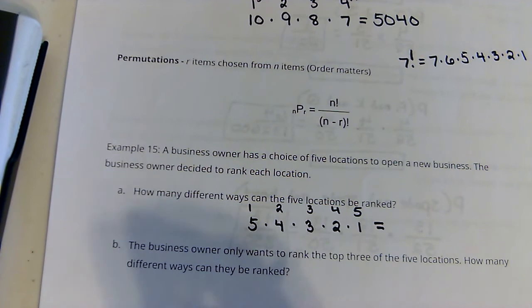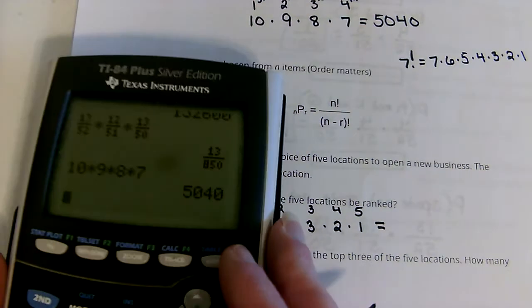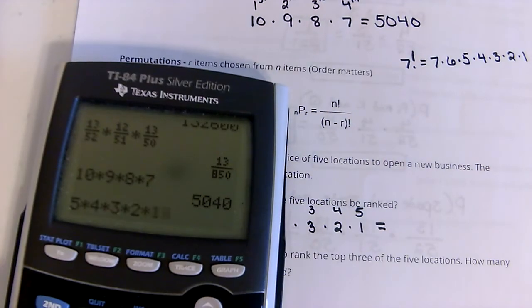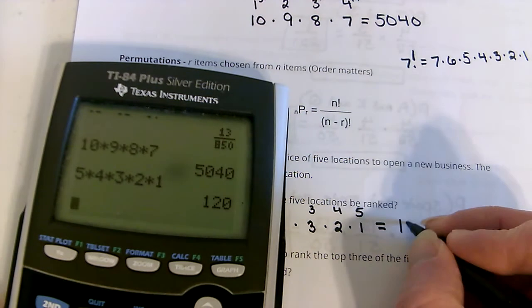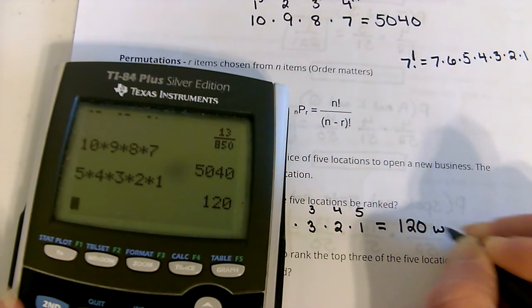Factorial, yes. 5 times 4 times 3 times 2 times 1. That's 120 different ways.